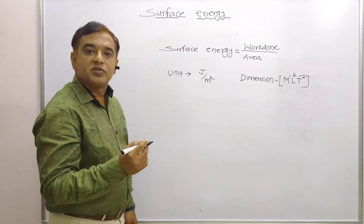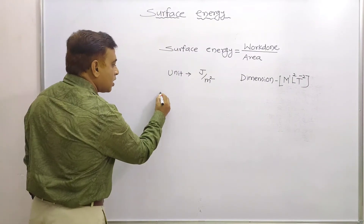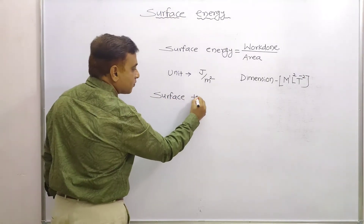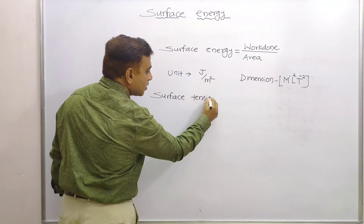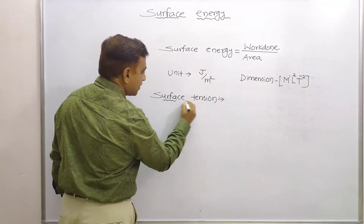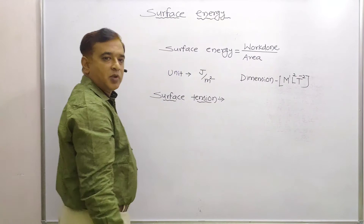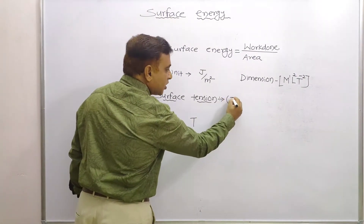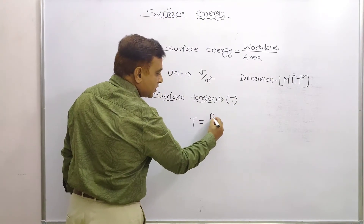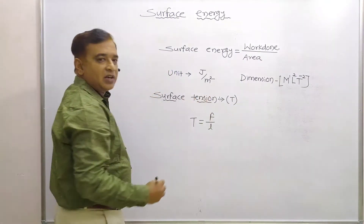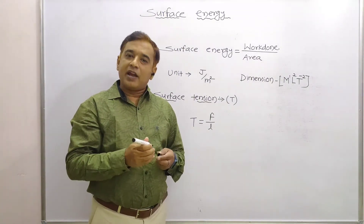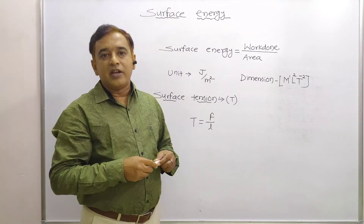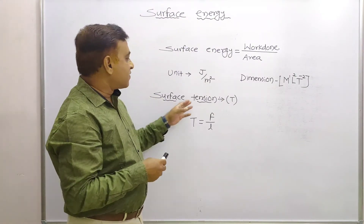Now we are going to learn about surface tension. Surface tension is denoted by the symbol T. It is defined as the force per unit length acting at right angles to a line drawn on the surface of the liquid, and this is known as surface tension.